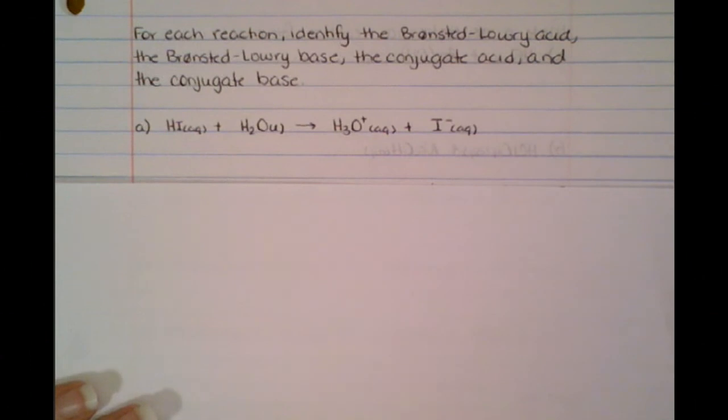Today we want to look at Bronsted-Lowry examples of acids and bases, and we're going to take reactions and actually identify the acid, the base, the conjugate acid, and the conjugate base. Now if you recall, a Bronsted-Lowry acid is a proton donor, and a base is a proton acceptor.